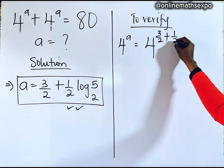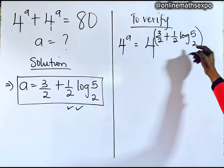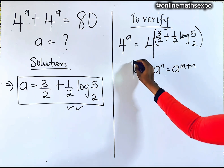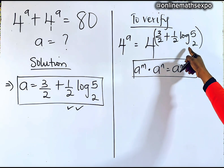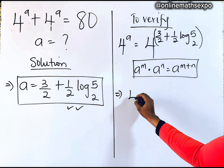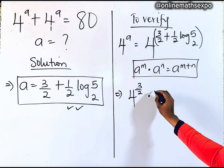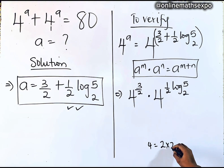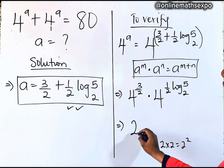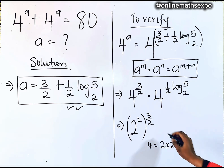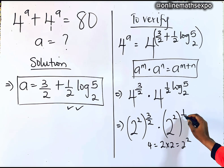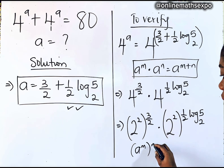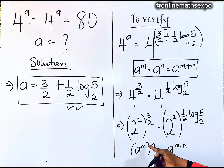These are all powers of 4. Remember, for every A to the power of N times M, it is A to the power of N plus M. So we turn this into 4 to the power of 3 over 2, multiplied by 4 to the power of one-half log 5 base 2. Since 4 equals 2 squared, we have 2 squared raised to the power of 3 over 2, multiplied by 2 squared raised to the power of one-half log 5 base 2. Remember, for every A to the power of M raised to the power of N, it is A to the power of M times N — the powers always multiply.